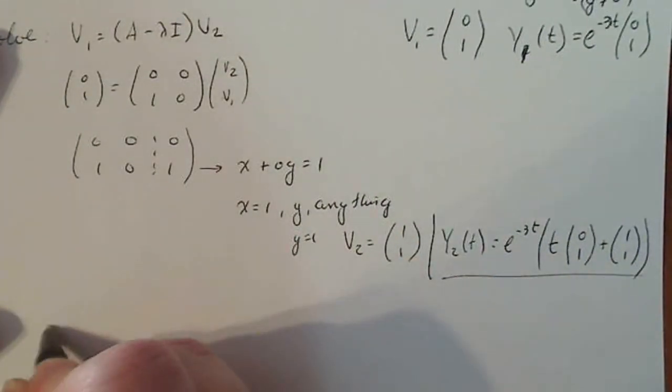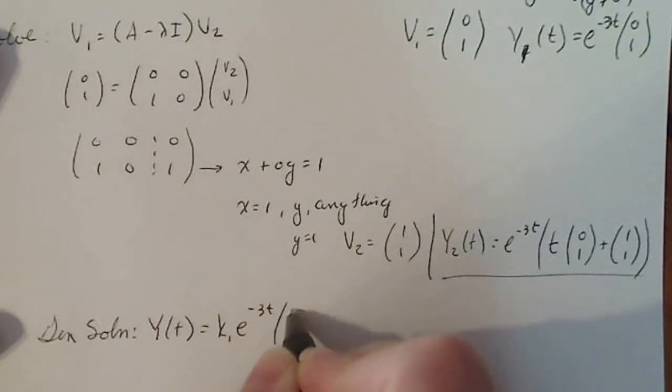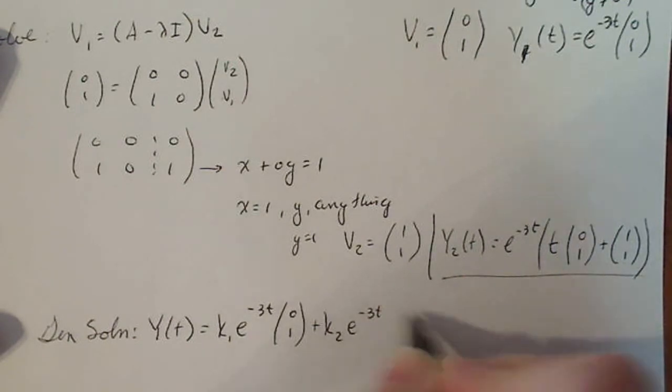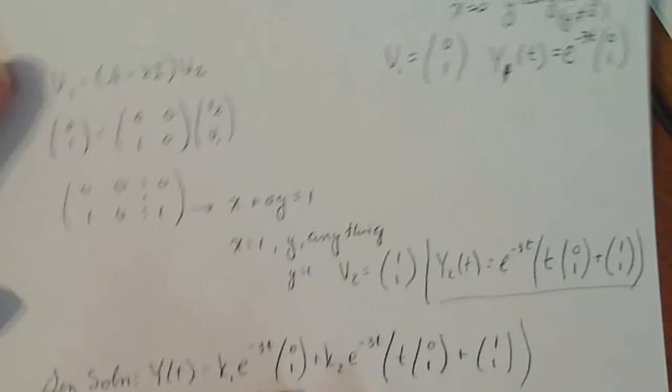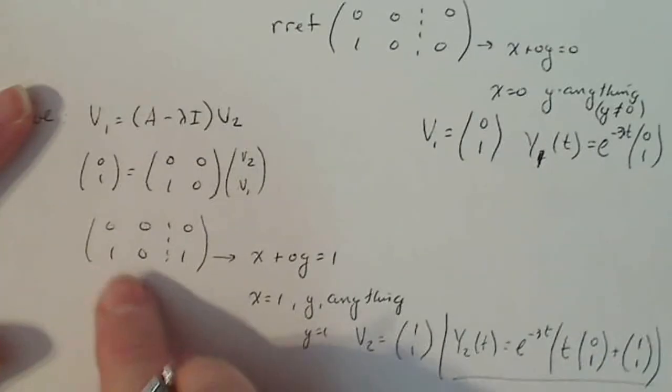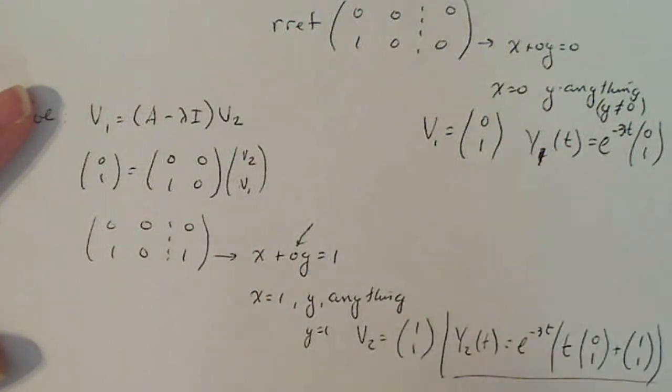So if I want to write my general solution, I end up with capital Y of t is equal to k1 e to the minus 3t times (0,1) plus k2 e to the minus 3t times t times (0,1) plus (1,1). Now, in class, when we did this problem, this little value of c popped up here, but we don't need it in this problem because of that 0 right there. It makes the problem slightly different.